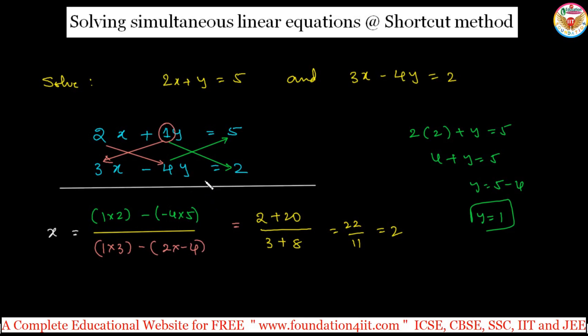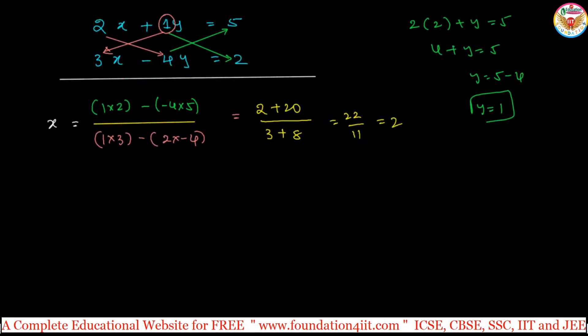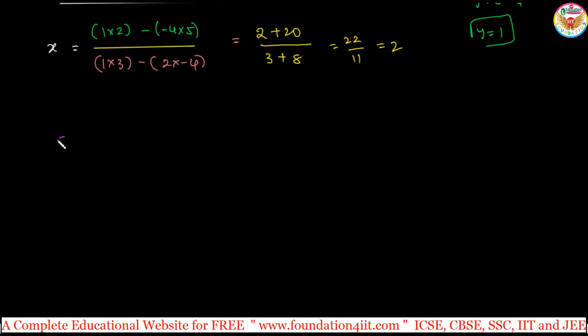To find out the value of x, just simple cross multiplications, numerator and denominator will come, just simplify and get the answer. Let me take one more example to get a clearer idea for you. The question is solve 32x plus 12y equals 120 and 22x plus 17y equals 100. These are the equations.